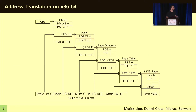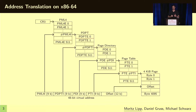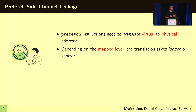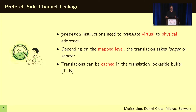On modern processors, this is done with so-called page tables, where you have different levels that give you the meta information allowing you to translate a virtual address to the physical one. And intuitively, depending on the mapped level that is used, the translation will take either longer or shorter.